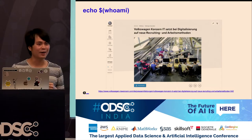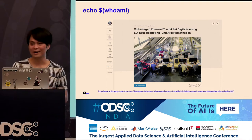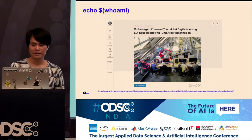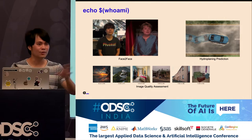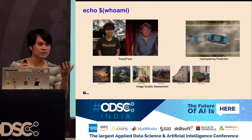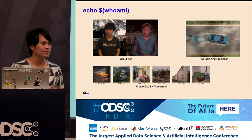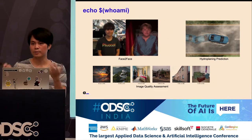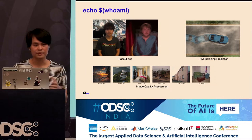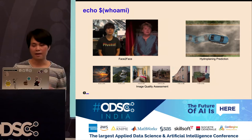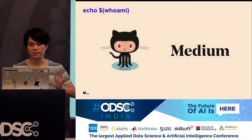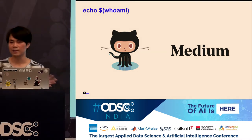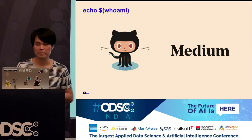We usually helped digitalize Volkswagen, one of the biggest car makers in the world. I also do a lot of fun projects, and I work on things like hydroponic prediction and sorting images according to aesthetics or other topics. I like to do open source, so some of the code is on GitHub. I also like to write about this stuff — some articles are on Medium.